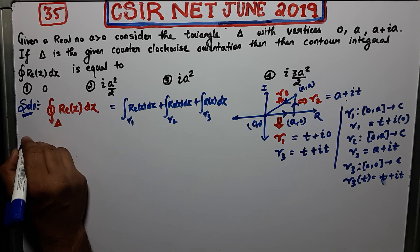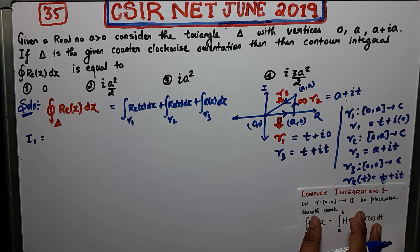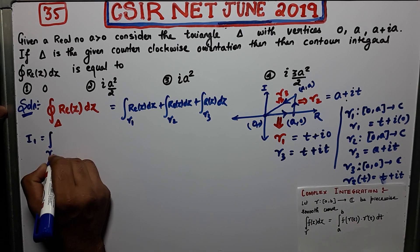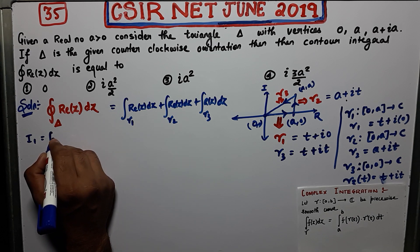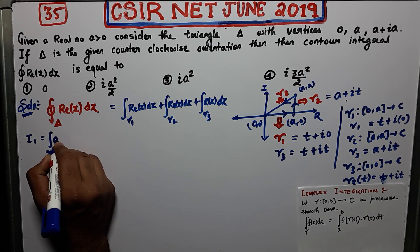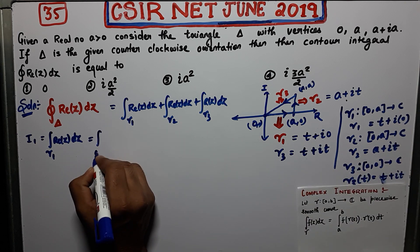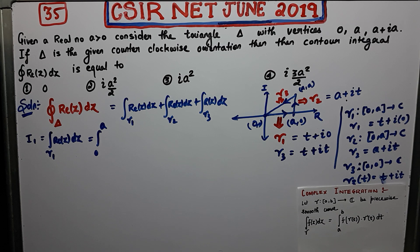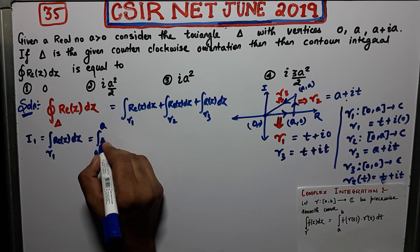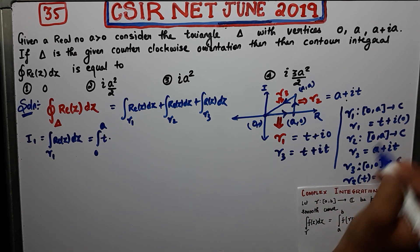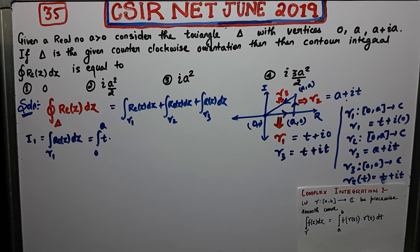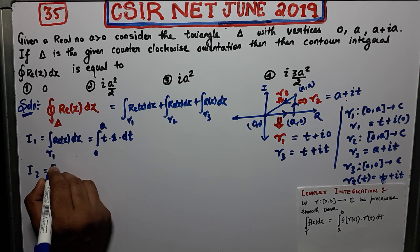Now I will evaluate the first integral, I1. Using the definition: gamma 1 goes from 0 to a, f(gamma(t)) means taking the real part of gamma 1(t) = t + i·0, which gives t. Then gamma 1'(t) = 1. So I1 = integral from 0 to a of t · 1 dt.